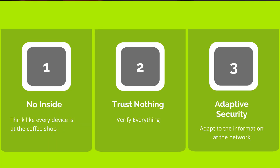Number one: there is no longer any such thing as inside the network. Here's a simple way to think about it — act like every device is at a coffee shop. Number two: trust nothing and verify everything. You have to assume that your network has been breached and you want to contain the attackers.